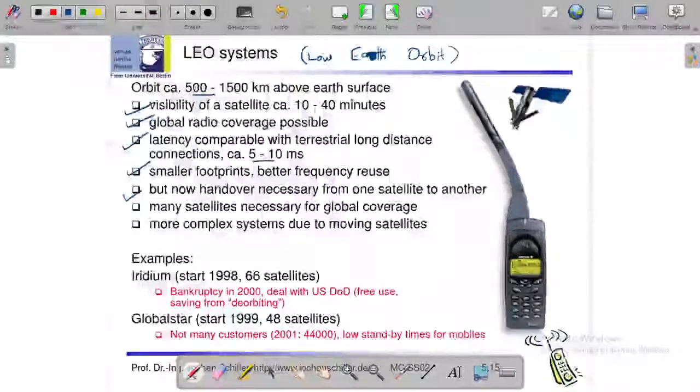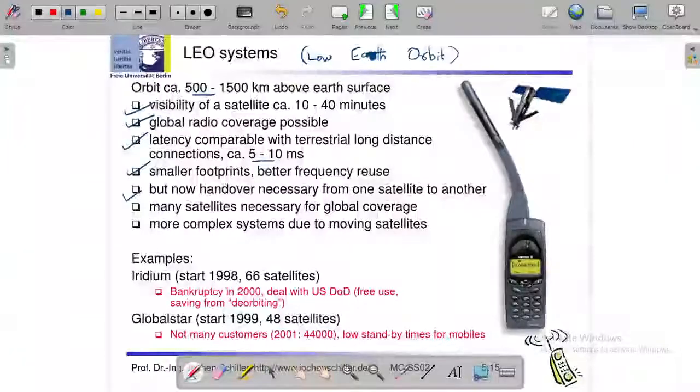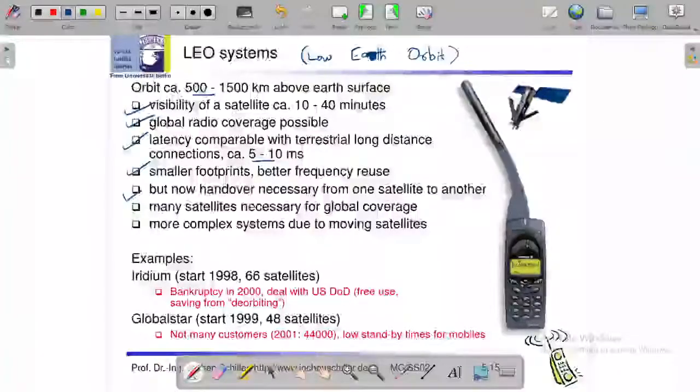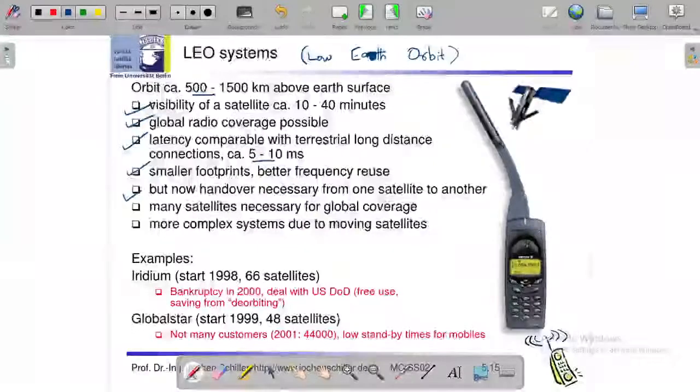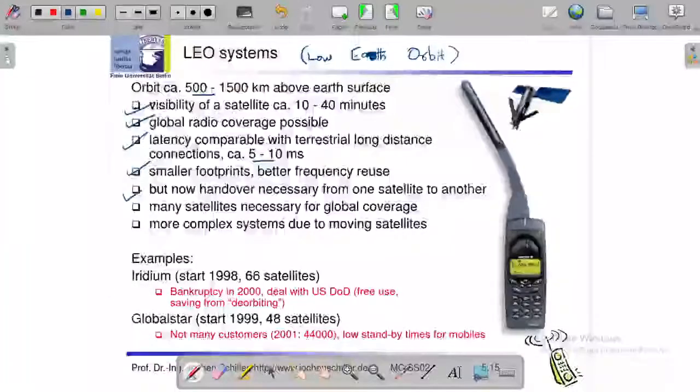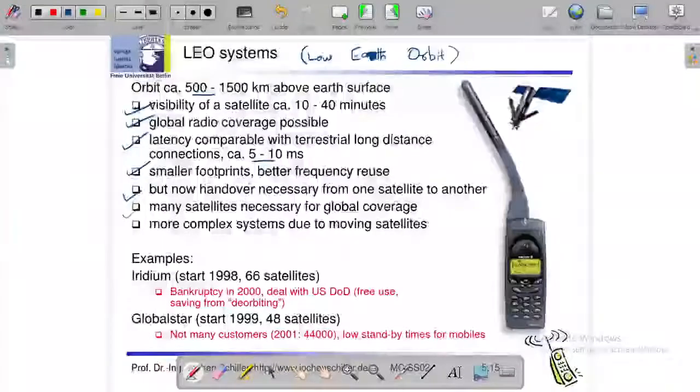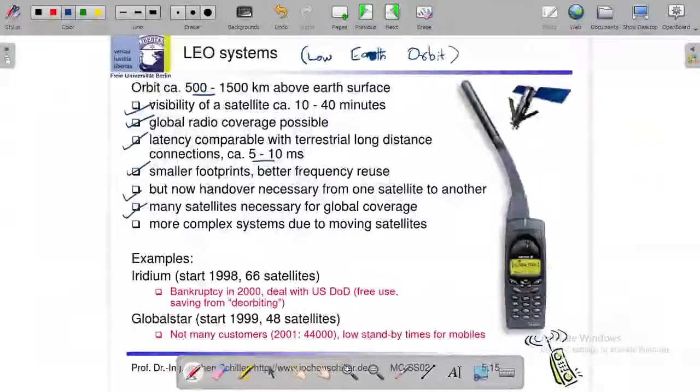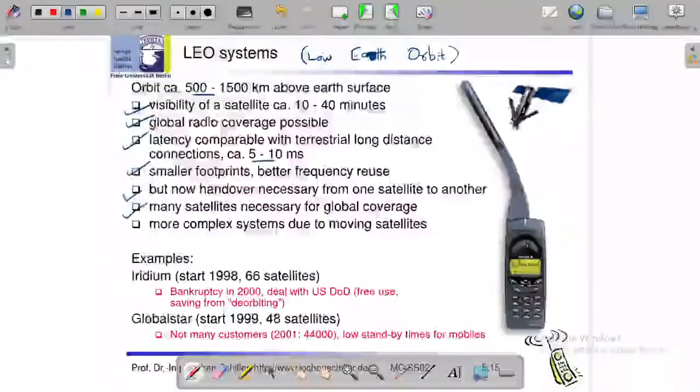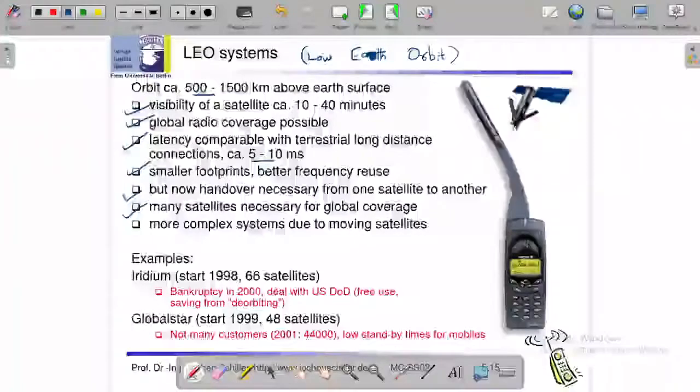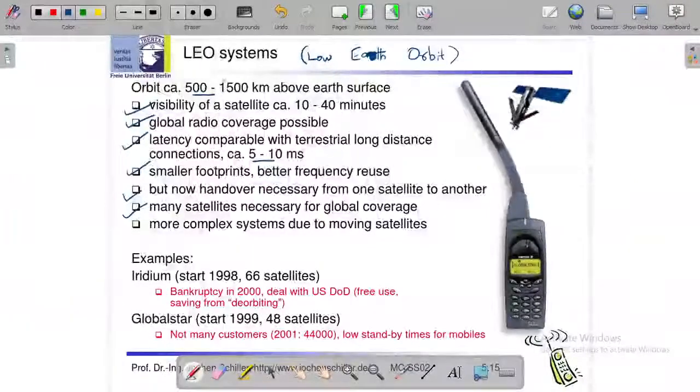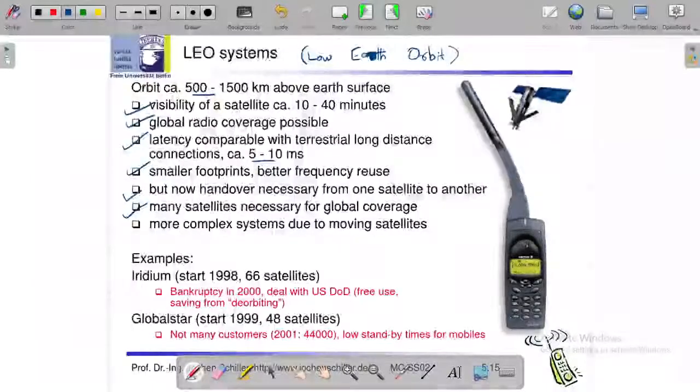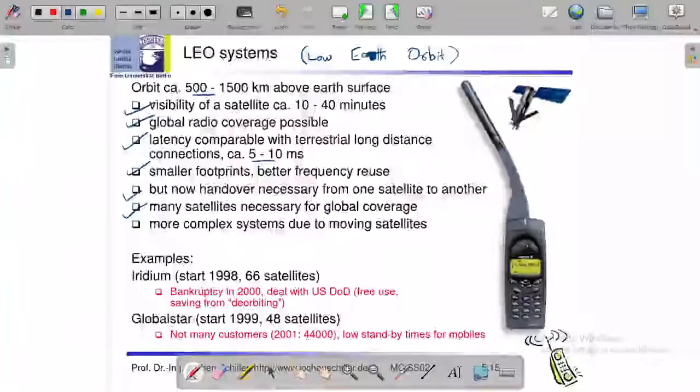We see LEO system because for example if you communicate, handover necessary, okay. The next thing is many satellites are necessary for global coverage. If one satellite is not global coverage, the reason is this distance in low orbit. We have LEO systems, we have global coverage, we have a large area we have to cover.